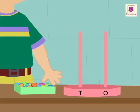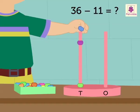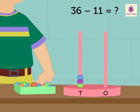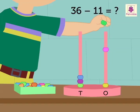Let us understand with Tim as he finds thirty-six minus eleven. Here, as the minuend is thirty-six, he puts three beads in the tens rod and six beads in the ones rod.